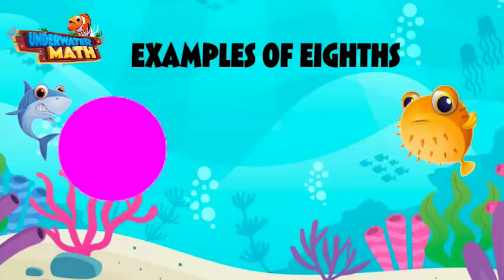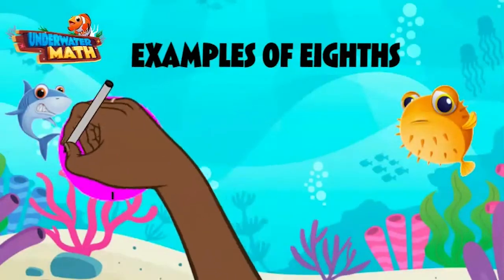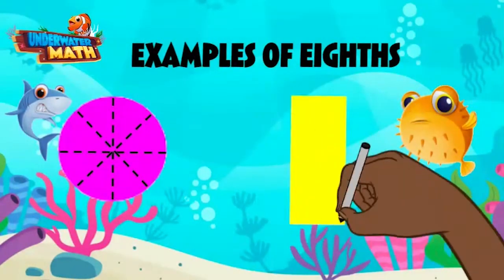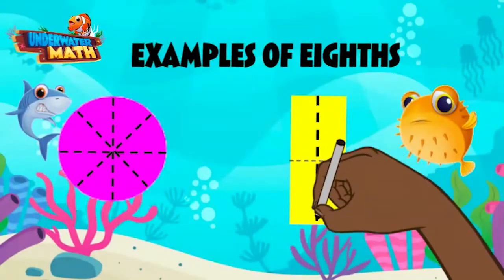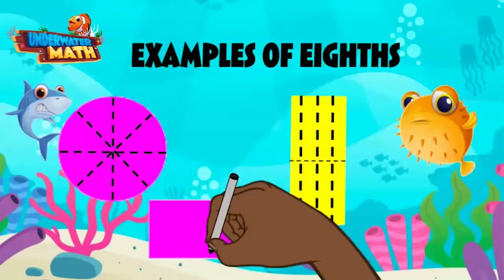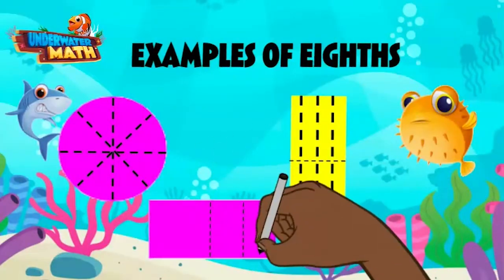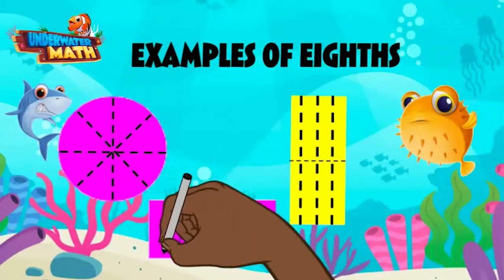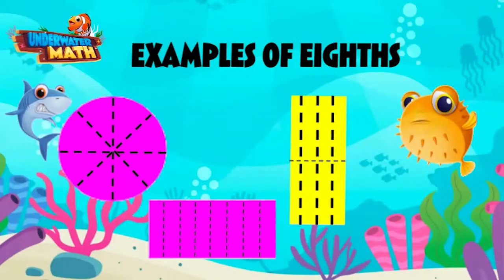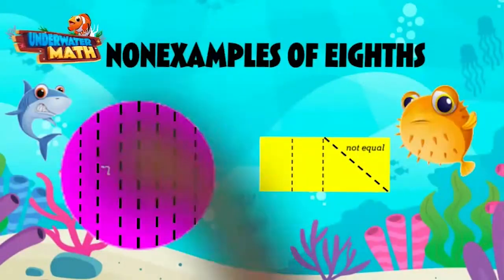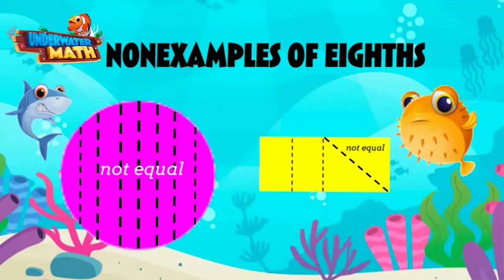Now let's move to eighths. We'll use a circle like a pizza pie and draw lines like this to create equal parts. With a rectangle, we can draw eighths with one horizontal line and vertical lines. But you can't make eighths like this with a circle, or this rectangle — we may have four equal-sized parts on the left, but the diagonal lines on the right do not create equal parts.